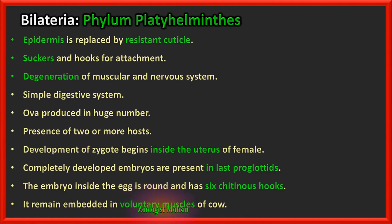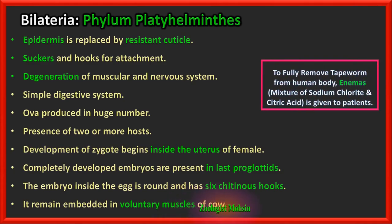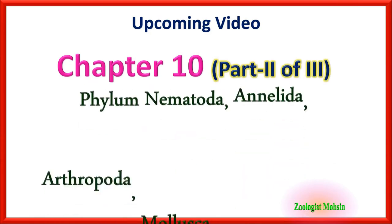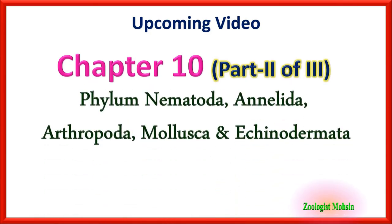If cow meat is eaten uncooked or poorly cooked, the parasite can transfer into our body. To fully remove tapeworm from the human body, enemas — a mixture of sodium chloride and citric acid — are given to patients, as removing tapeworm from the intestine is not easy. That's it for part one. In the upcoming video, Chapter 10 Part 2 of 3 will include Phylum Nematoda, Annelida, Arthropoda, Mollusca, and Echinodermata.